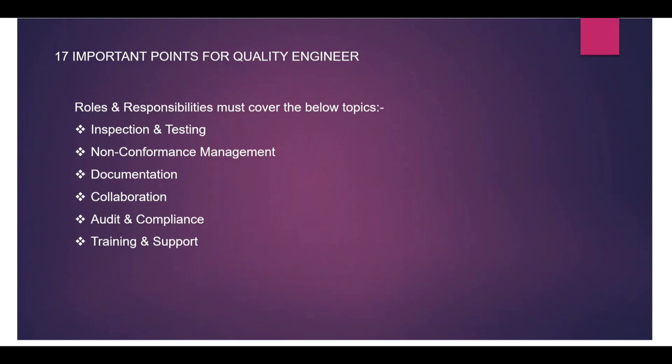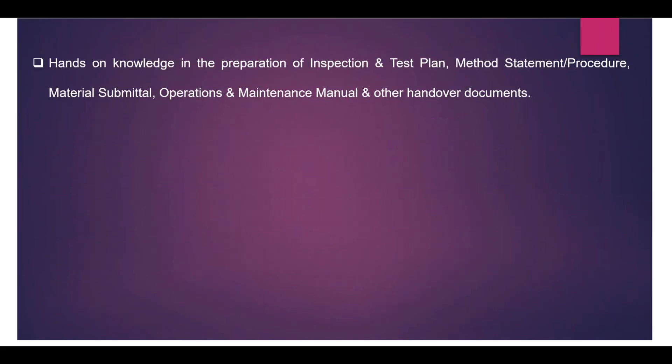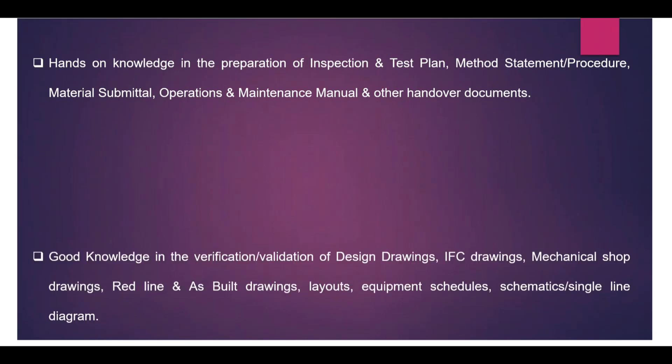The first requirement for a quality engineer is hands-on knowledge in the preparation of ITP (Inspection and Test Plan), method statements for all activities or procedures, material submittals for all materials, operation and maintenance manuals, and other handover documents. This is one of the very important points related to a quality control engineer.